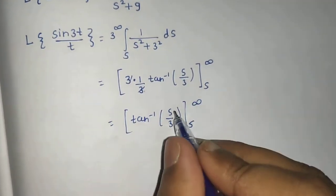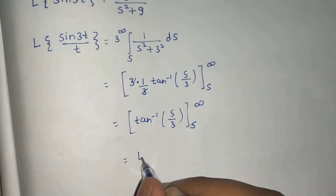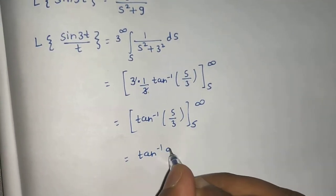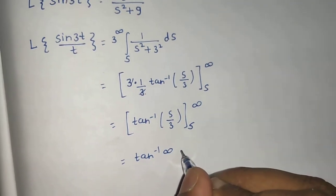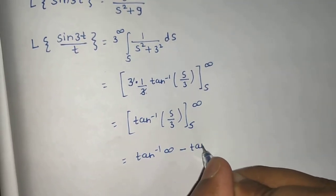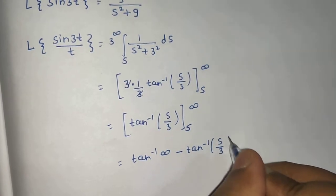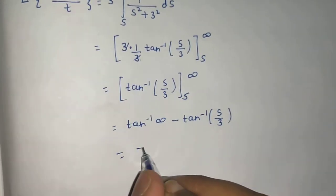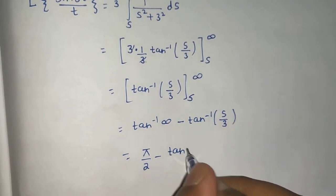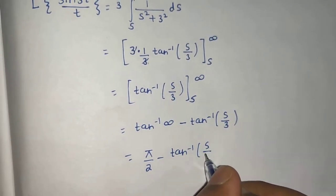So this will be tan inverse s by 3 from s to infinity. So if you put infinity, infinity by 3 is infinity only. So tan inverse infinity minus tan inverse if you put s, so s by 3. So this is pi by 2 minus tan inverse s by 3.